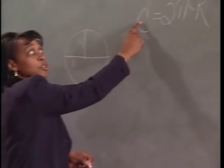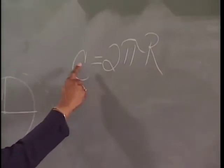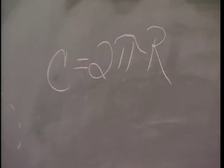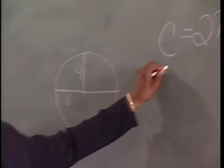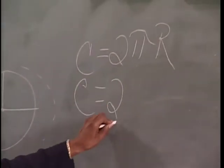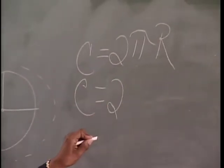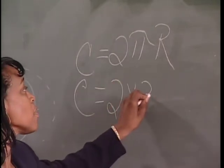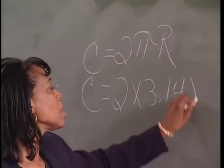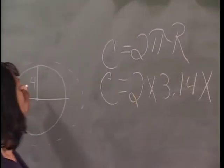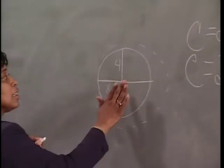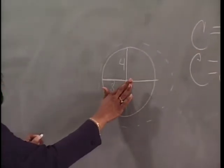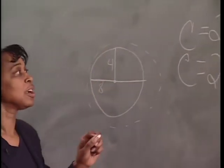What is this asking for? Circumference is equal to 2 times pi times radius. Here's a radius here. Pi is 3.14, times my radius — this is the distance from the center to the edge of the circle.